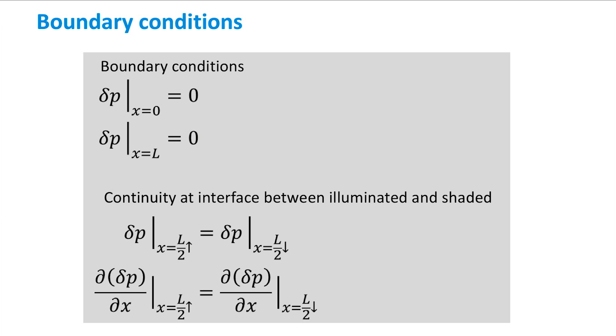And because of continuity, the space derivative of the carrier concentration on both sides of the boundary needs to be the same as well. Now we have four boundary conditions, and we can solve the two equations.